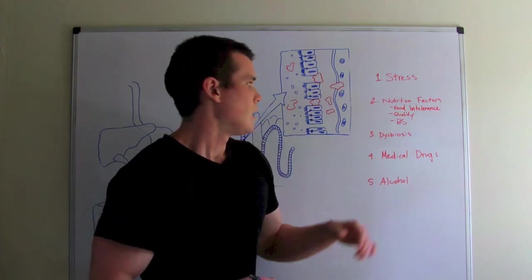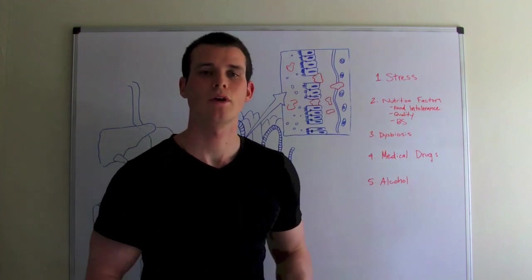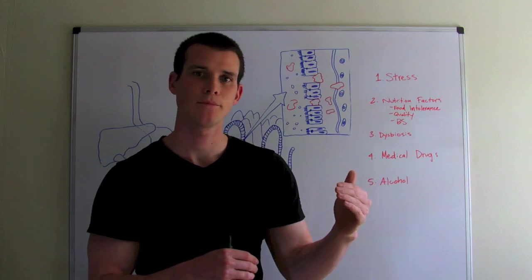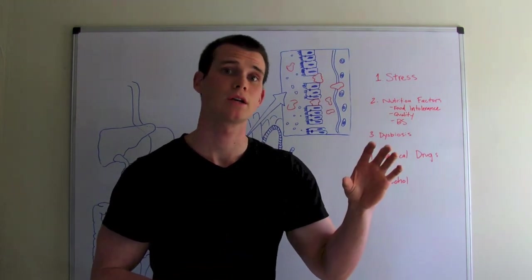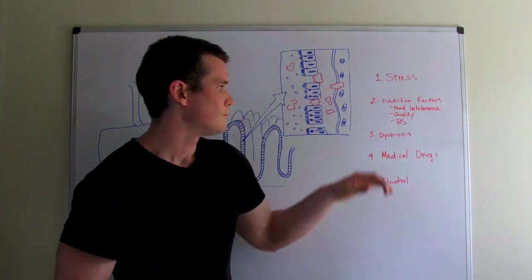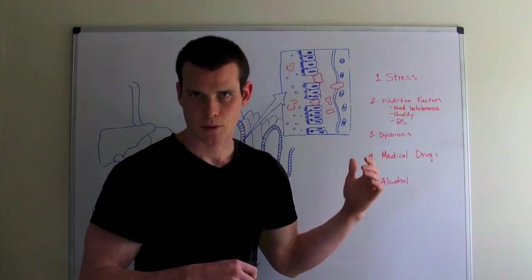One is dysbiosis. So if we have an imbalance between good bacteria and bad bacteria, usually the ideal ratio is 85% good bacteria to 15% bad bacteria. But if it's flipped or we have a bad ratio, then that can cause problems.